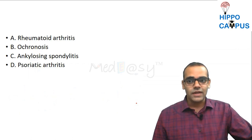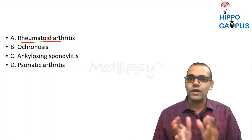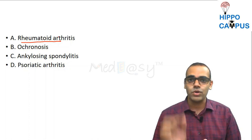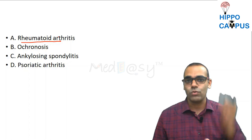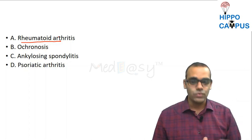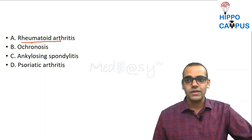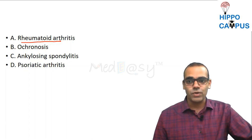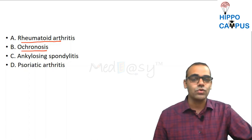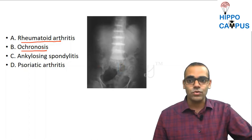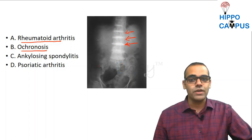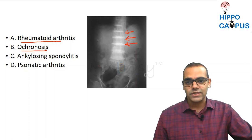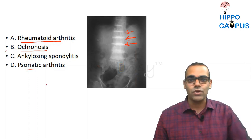The other options: rheumatoid arthritis does not affect the lumbar spine — it only affects the cervical spine (C1-C2) and sometimes facet joints. Ochronosis (also known as alkaptonuria) shows disc calcification where the intervertebral disc appears ossified. Psoriatic arthritis will not have the bamboo spine appearance. So the answer is ankylosing spondylitis.